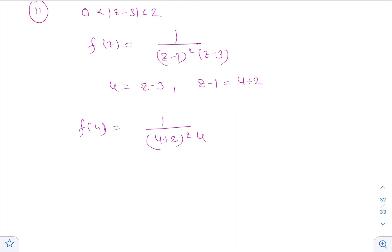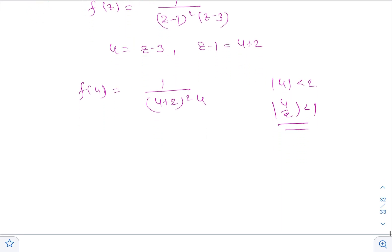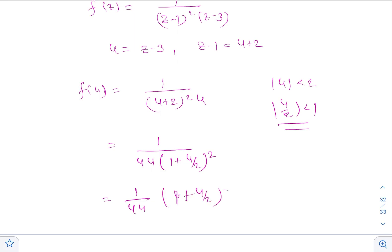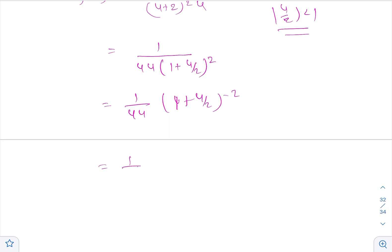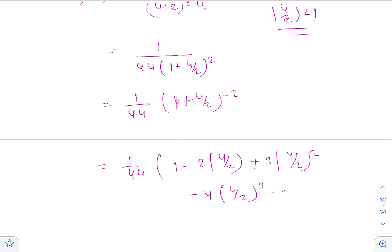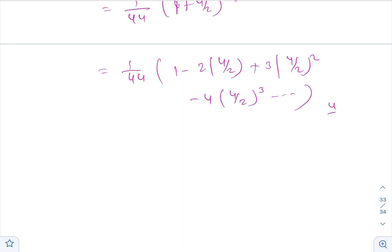We need to expand this in the region |u| < 2, so |u/2| < 1, meaning terms like u/2 should appear in the expansion. Taking 2 out of the bracket gives 1 / [4u · (1 + u/2)²], which can be written as (1/4u) · (1 + u/2)^(-2). This expands as (1/4u) · [1 - 2(u/2) + 3(u/2)² - 4(u/2)³ + ...].